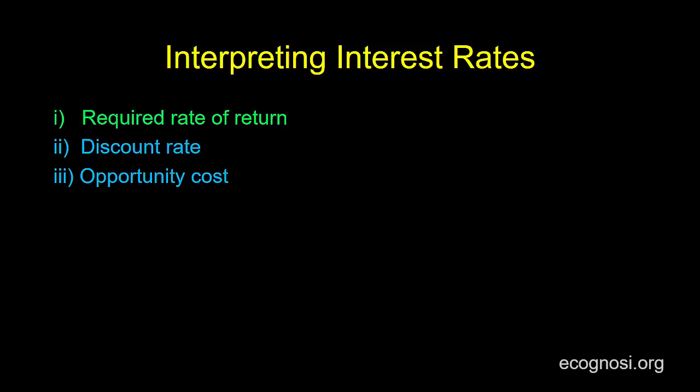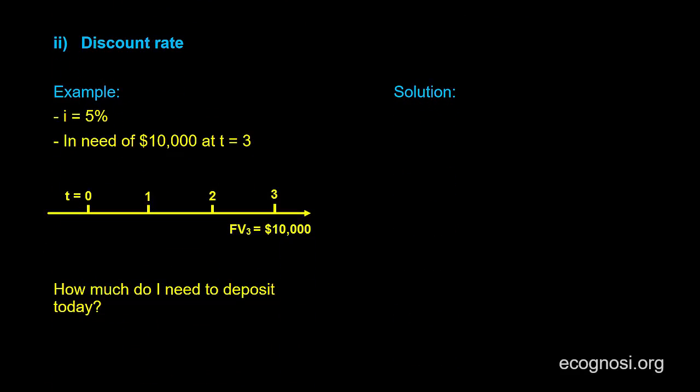Now let's move on to the second interpretation, that of the discount rate and illustrate with an example as well. Actually, we've already seen this in the past, so it should be easy to understand. Assume that the bank I'm doing business with offers an annual interest rate of 5%, which I denote here with I.